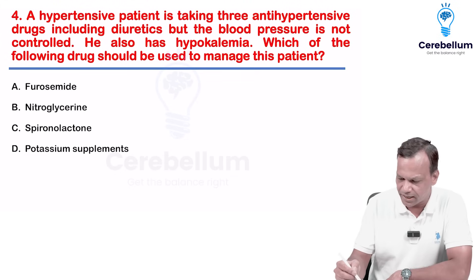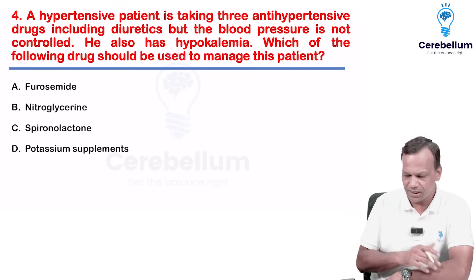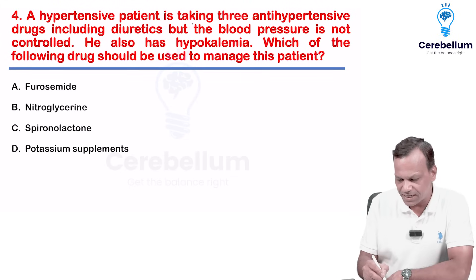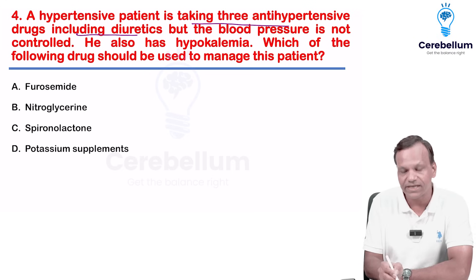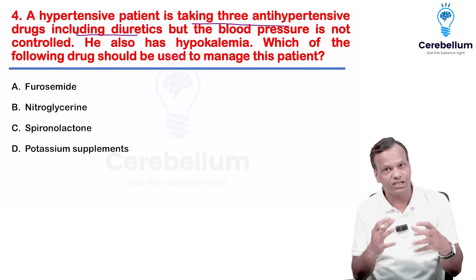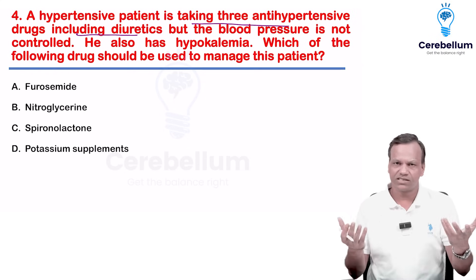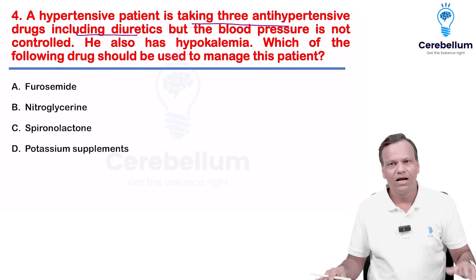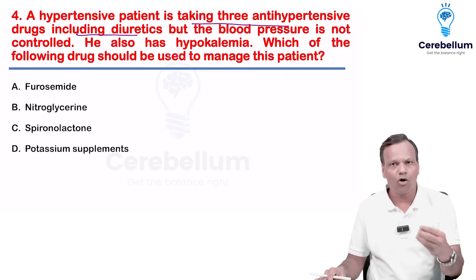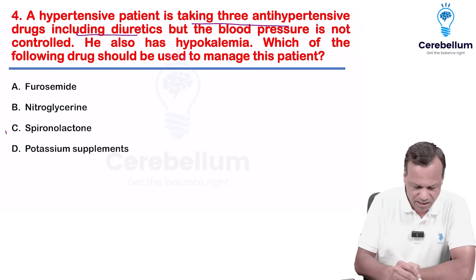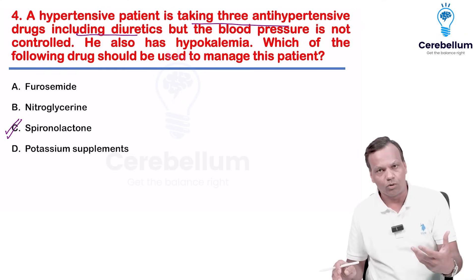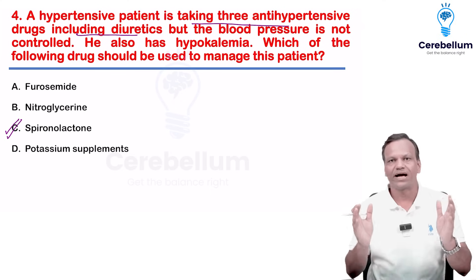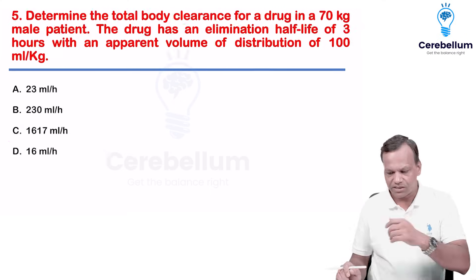This question is related to resistant hypertension. A patient is taking three antihypertensive drugs including a diuretic — that is the definition of resistant hypertension. The drug of choice for resistant hypertension is a mineralocorticoid receptor antagonist like spironolactone or eplerenone.